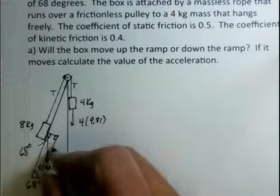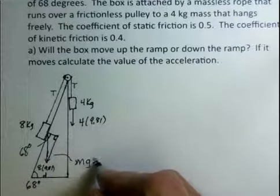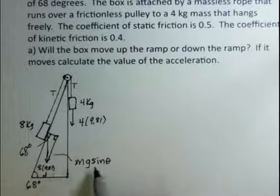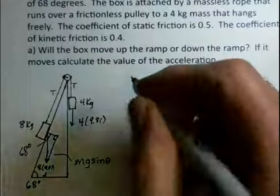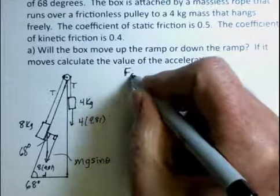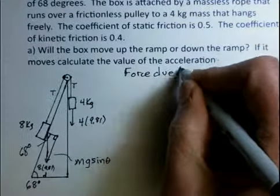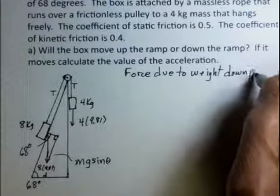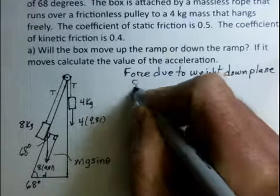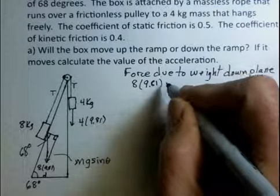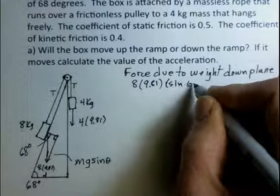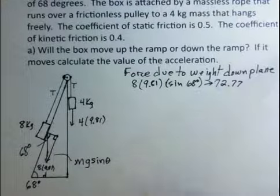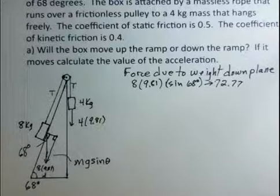We want the opposite side to that angle. So I'm going to have the sine of the theta in general. And this particular problem, it's going to be 8 times 9.81 times the sine of 68 degrees. So I'm going to go ahead and write that up here. So that's the force down the plane, force due to weight, down the plane. 8, 9.81, sine of 68 degrees. If you multiply those together, you get 72.77. That's the component of mg acting down the plane.